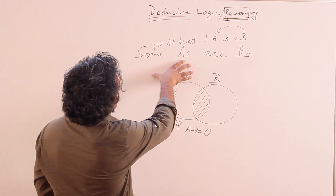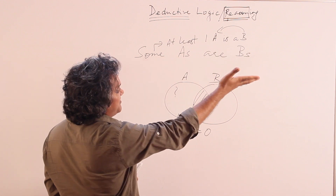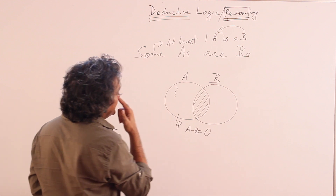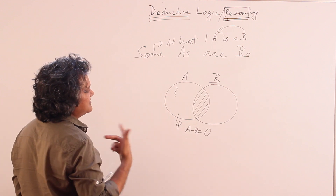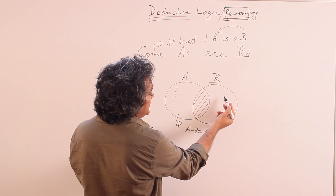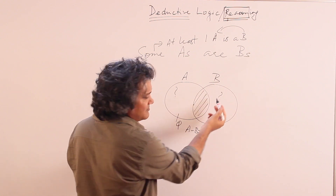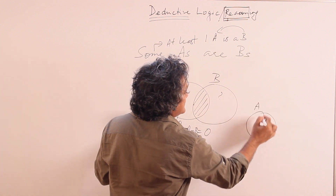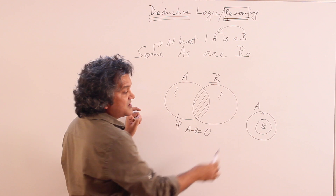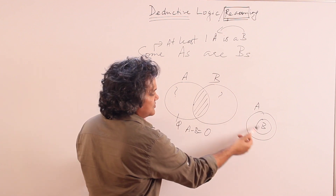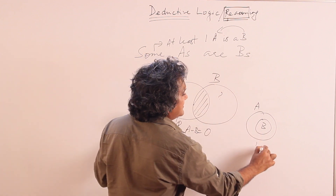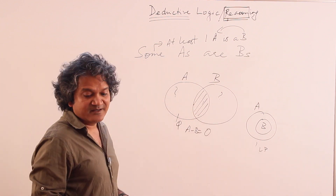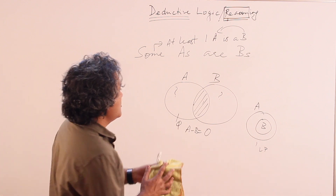Remember: 'Some A's are B's' does not necessarily mean 'some A's are NOT B's.' It may mean that, or it may not — the only thing necessarily true is that at least one A is a B and at least one B is an A. Similarly, can you say there will be B's outside A? You can't say for certain. For example, in one representation all B's are A's — but again, that is only a logical possibility. The only necessary statement is the overlap itself.